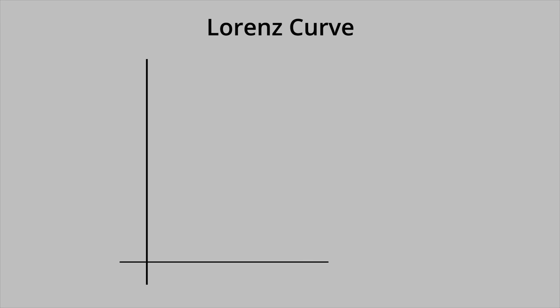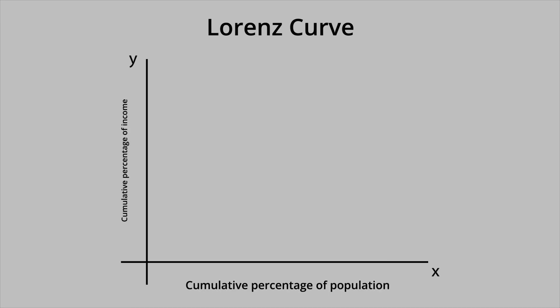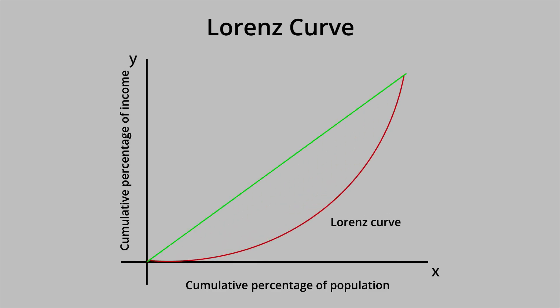To understand the Gini Coefficient, we must first look at the Lorenz Curve. The Lorenz Curve is graphically represented with percentage of the population on the x-axis and the percentage of income on the y-axis. The curve shows how income is distributed among a group of people or households. The Gini Coefficient relates the observed distribution shown by the Lorenz Curve to an imagined perfectly equal distribution of income. So a country's Gini Coefficient represents how far its income distribution is from perfect equality, where income will be distributed equally across each member of society.